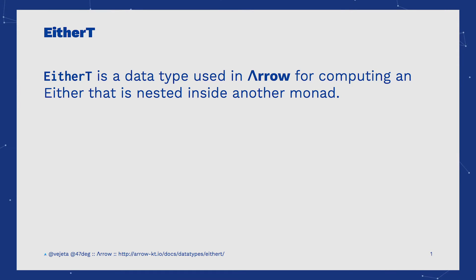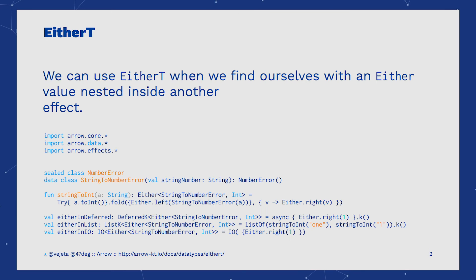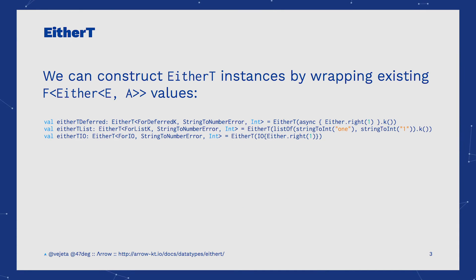EtherT data type is used when an Either value is wrapped inside another type. In this sense, it's similar to the OptionT data type. Here, we can see an Either wrapped inside an asynchronous computation, inside a list or inside an I.O. One way to create this EtherT is to take the values of the previous examples and just pass it to an EtherT constructor, as you can see here.